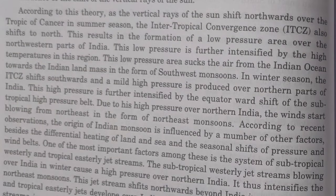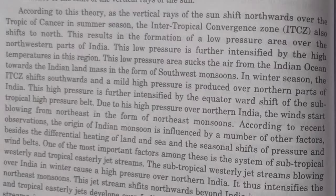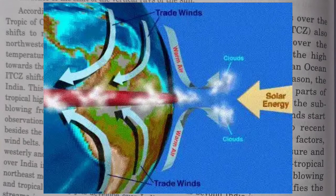According to his theory, the ITCZ — the Intertropical Convergence Zone — forms wherever the vertical rays of the sun fall. When the sun is over the equator, the ITCZ forms on the equator, and the southeast and northeast trade winds come and collide in the ITCZ.